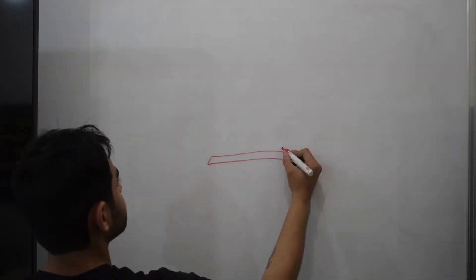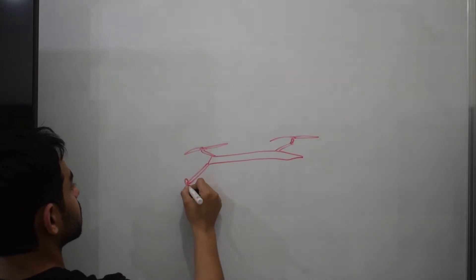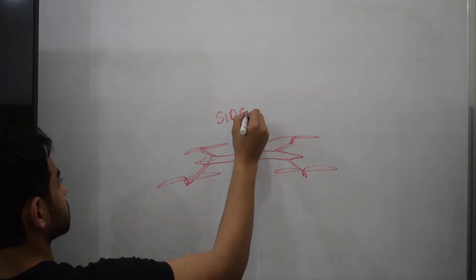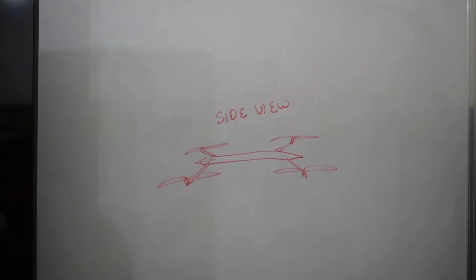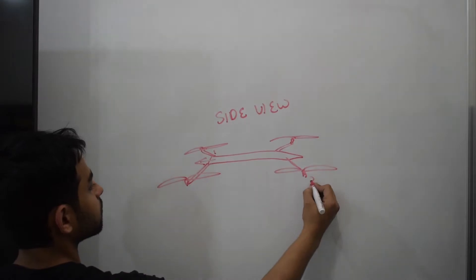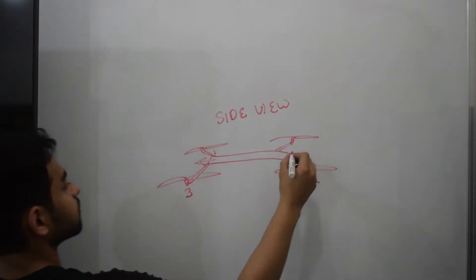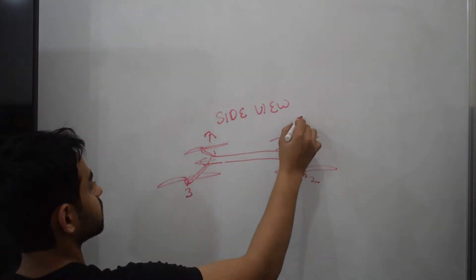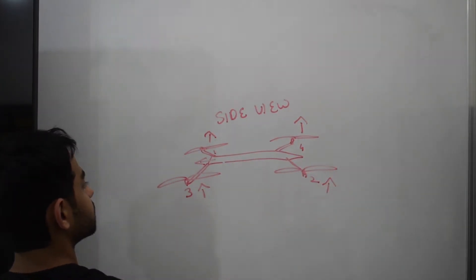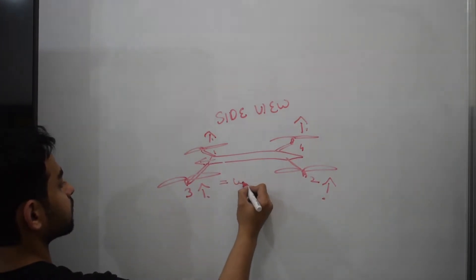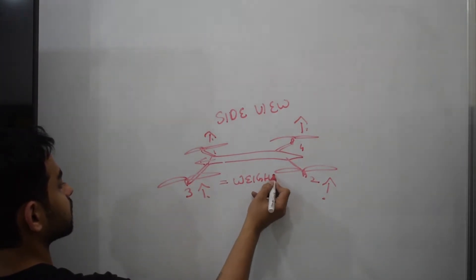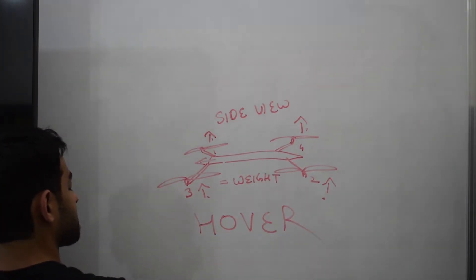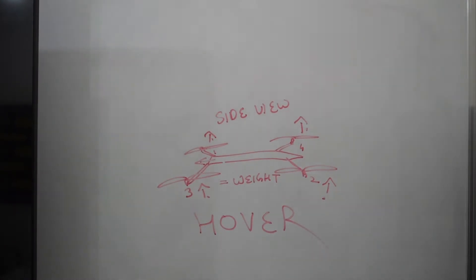Here is my quadcopter from a side view angle. This time it's facing left. Because it's facing towards the left of the board, we shall name the rotors 1, 2, 3, and 4 in this order. The arrows denote the thrust. When all the thrusts are equal and collectively equal to the weight of the drone, the drone hovers or stays in one place.